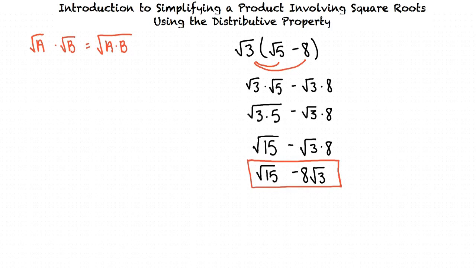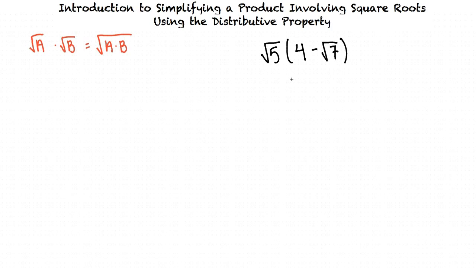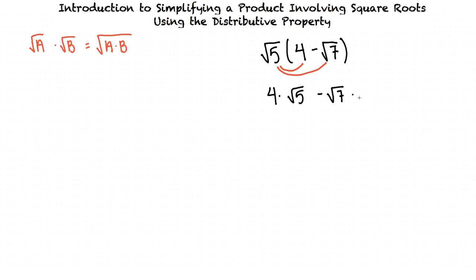Why don't you try the next problem? The square root of 5 times the quantity 4 minus the square root of 7. First we need to distribute the square root of 5. So we multiply 4 by the square root of 5, and we multiply negative square root of 7 by the square root of 5. That leaves us with 4 times the square root of 5 and negative square root of 7 times the square root of 5. Simplifying, we get 4 square root of 5 minus the square root of 35, because 7 times 5 equals 35.